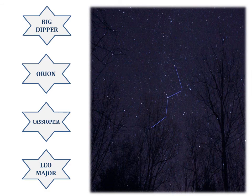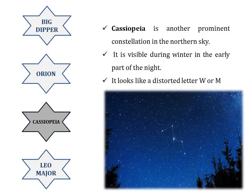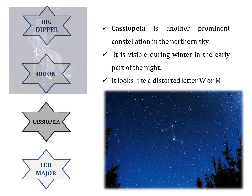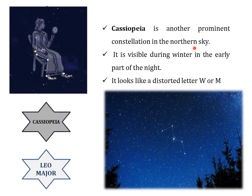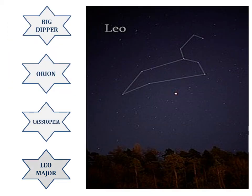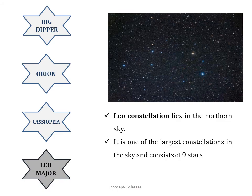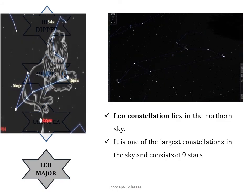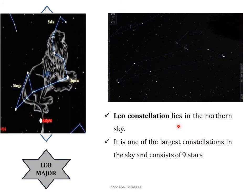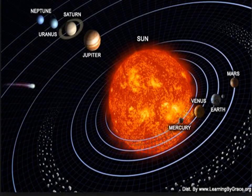Cassiopeia is another prominent constellation in the northern sky, visible during winter in the early part of the night. It looks like a distorted W or M. The last constellation we will study is Leo Major, which lies in the northern sky and is one of the largest constellations. It consists of nine stars. That's all about constellations.